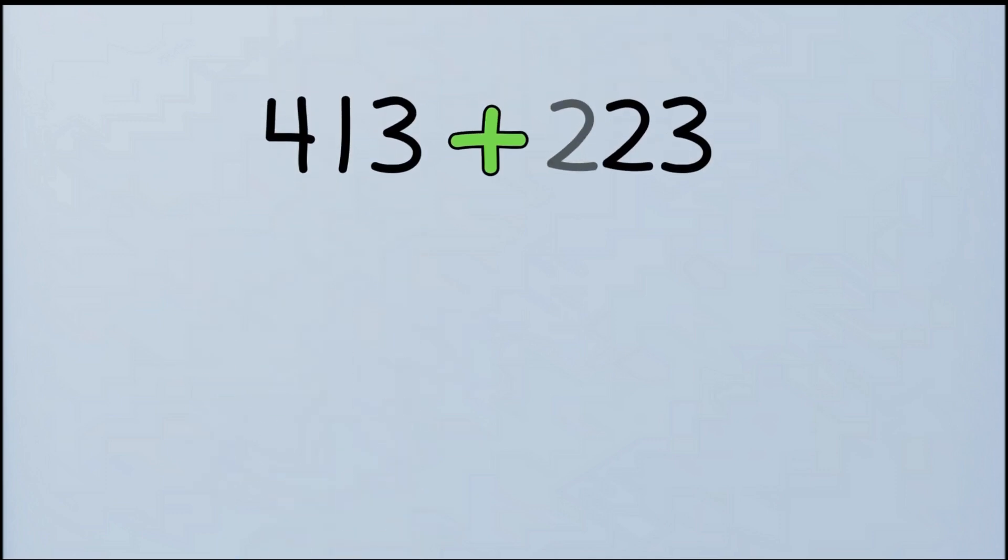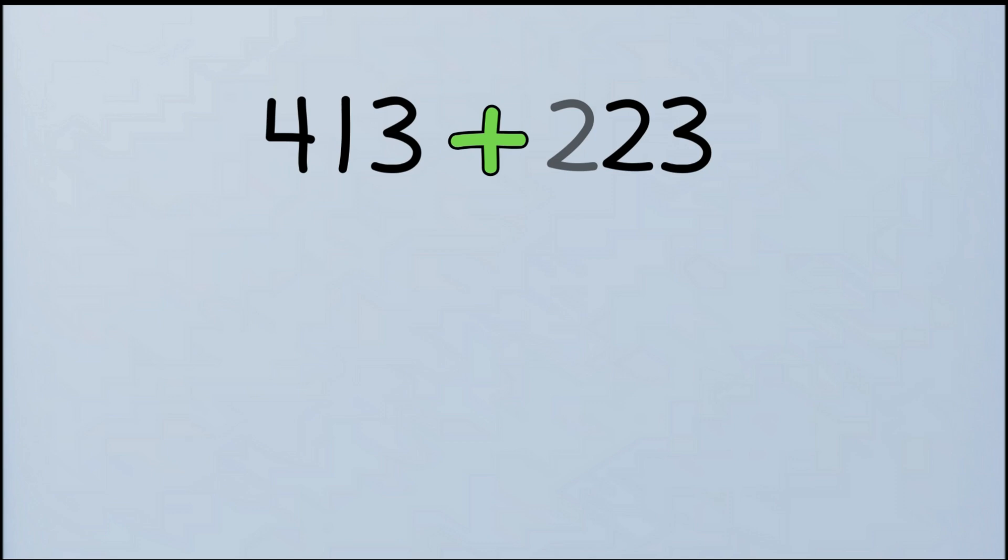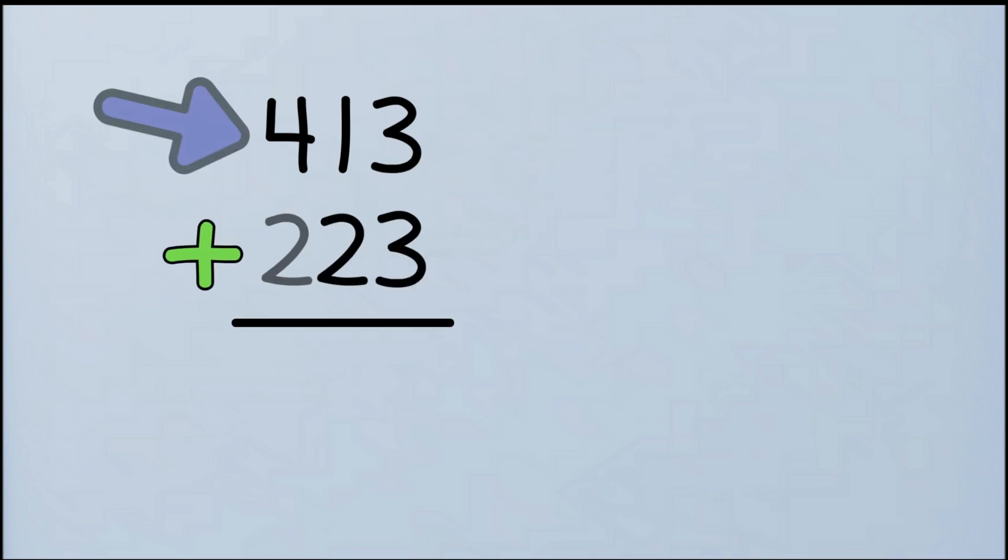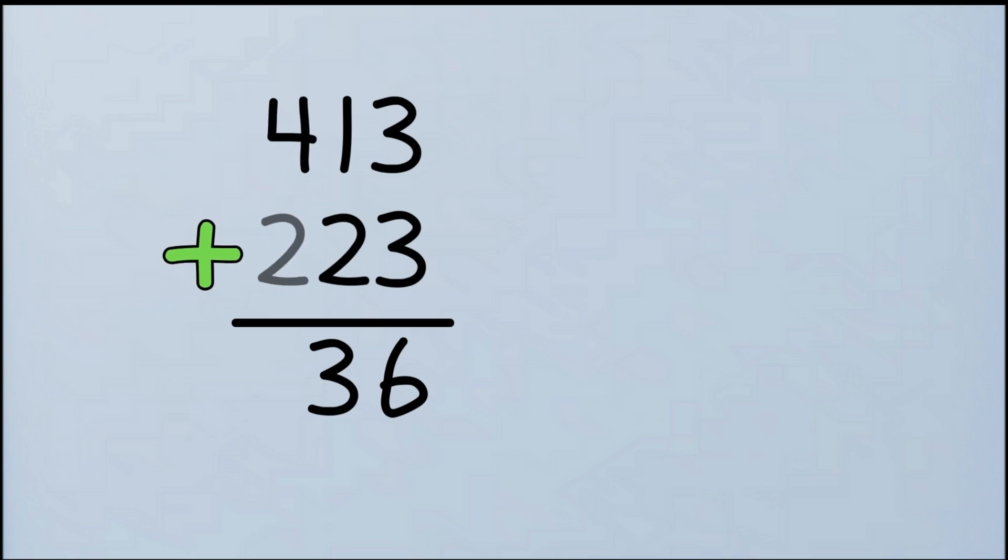Another example, 413 plus 223. Stack them. 413 plus 223. Now add, 3 plus 3 equals 6, 1 plus 2 equals 3, 4 plus 2 equals 6. The answer is 636. Pretty fun, wasn't it?